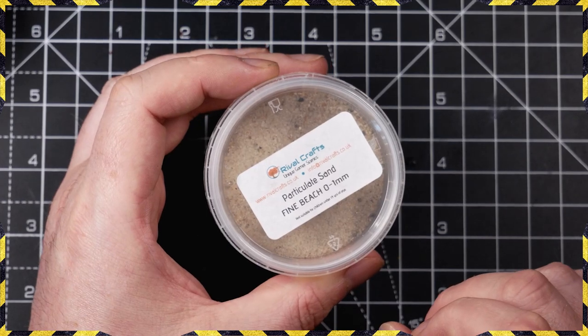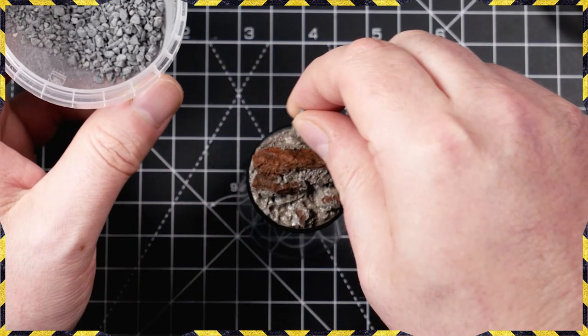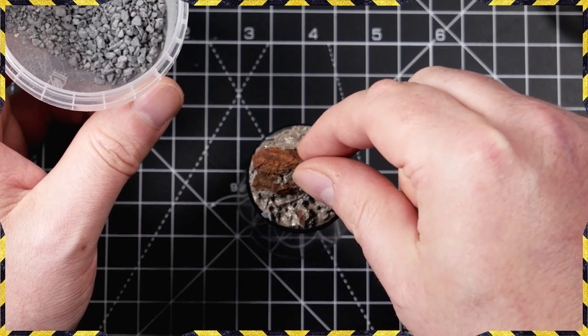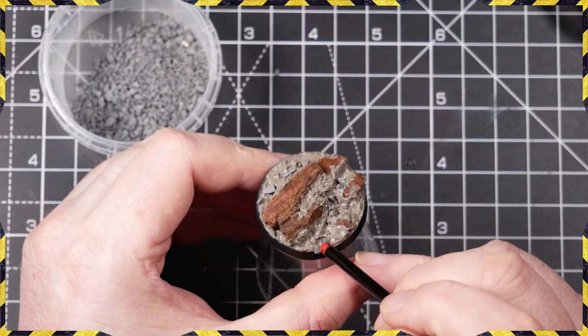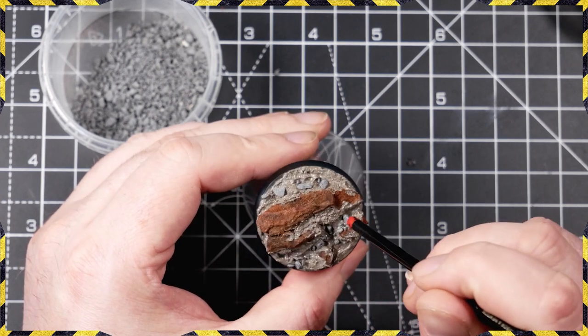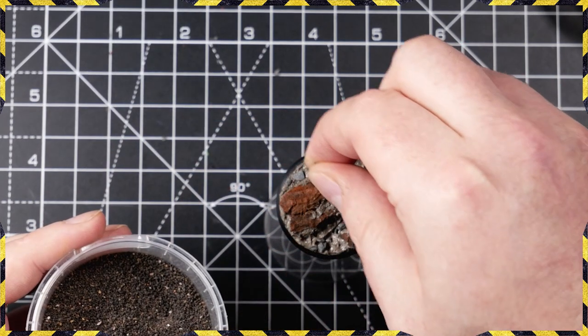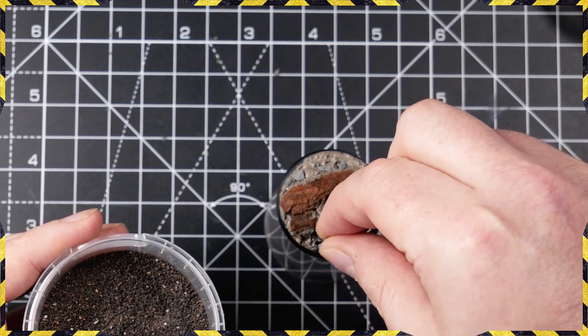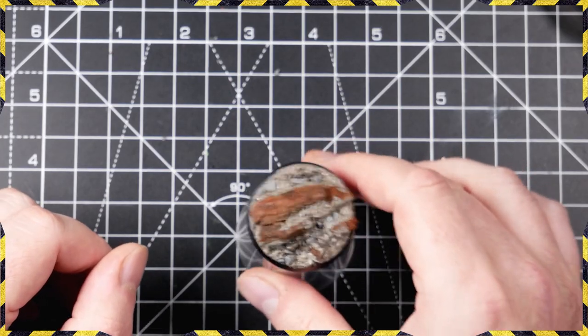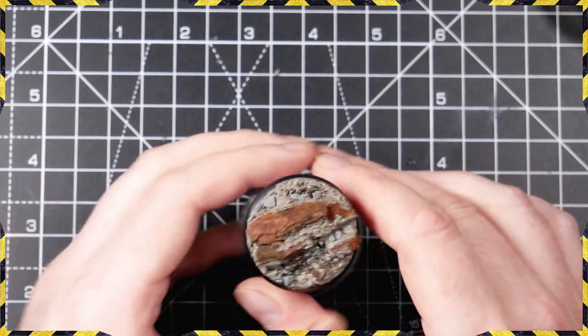We're using some products from Rival Crafts. I've got links to all the Rival products in the description below. We're starting off with a very large scale ballast. This is going to provide a little bit more of a rocky feel to things. We're then going to just prod those in with the end of a brush to make sure everything sits into the pumice.